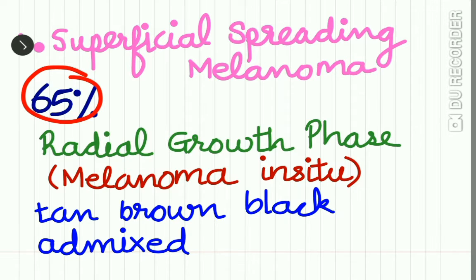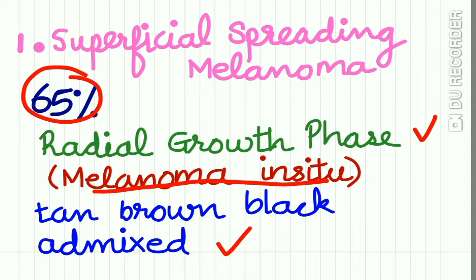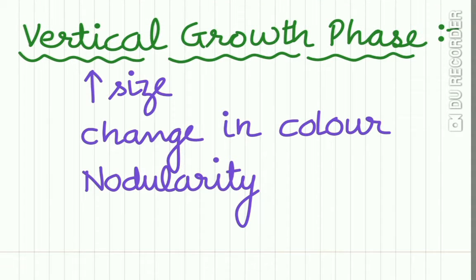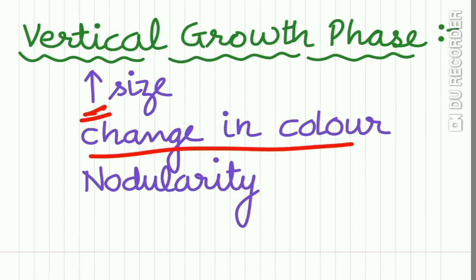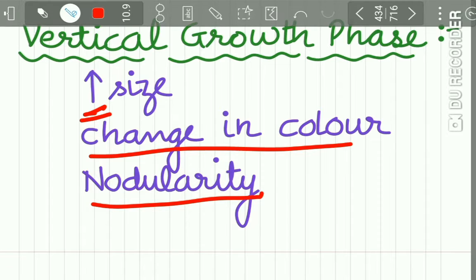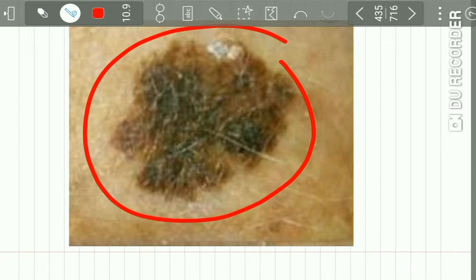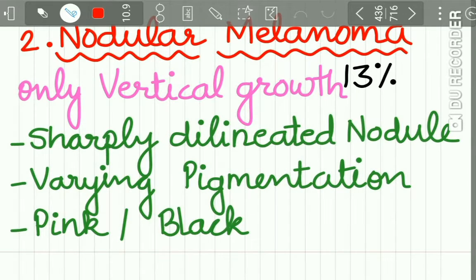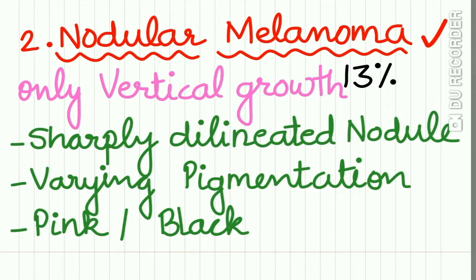Superficial spreading melanoma accounts for 65% of all malignant melanomas. In its radial growth phase, also called melanoma in situ, it appears as a tan, brown, or black, or admixed lesion. In the vertical growth phase there is increase in size, change in colour, and nodularity. This is a classical picture of superficial spreading melanoma in its radial growth phase.